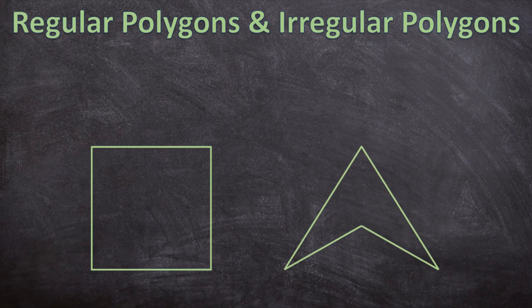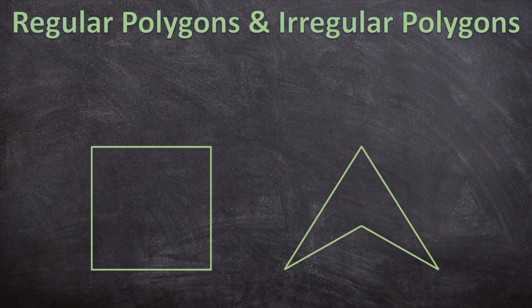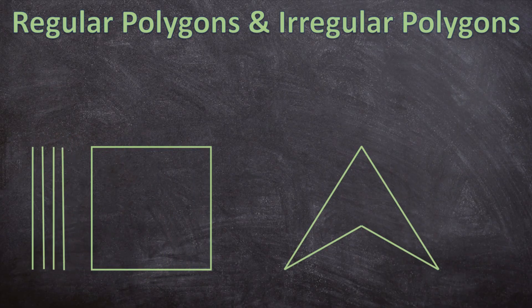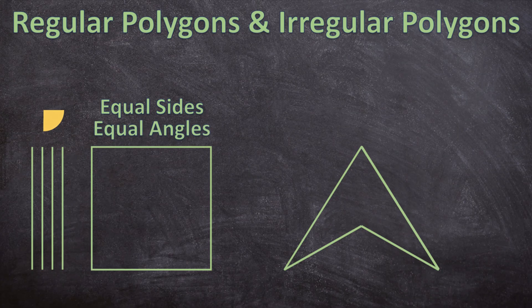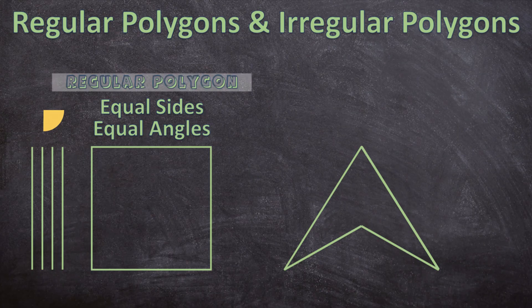Here are two shapes — one of them is a regular polygon and the other is an irregular polygon. Let's first look at the shape on the left. All its sides are the same length, so it has equal sides. All its angles are also equal. When a polygon has equal sides and equal angles, it is a regular polygon — so this square is a regular polygon.